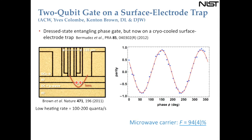In this setup the ions are in a 4-megahertz single potential well. Being cryogenically cooled, the heating rate is quite low — only 100 to 200 quanta per second for ions that are 40 microns off the trap surface. This is comparable to what one would see in the room-temperature experiment I just described, even though the ions are quite close to the surface.